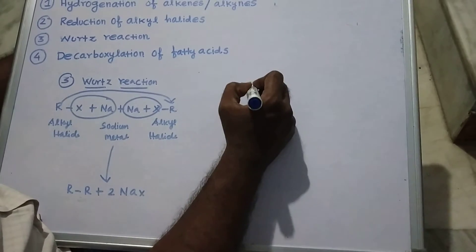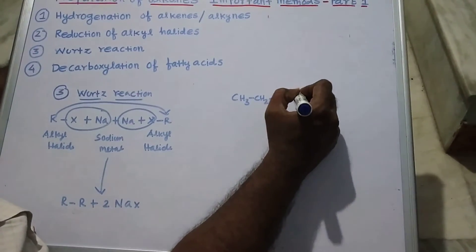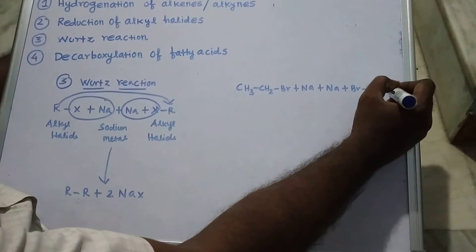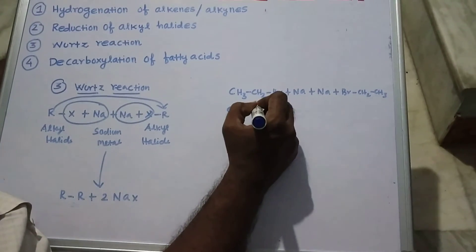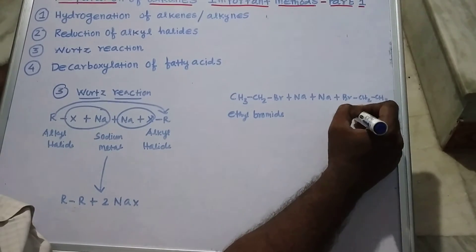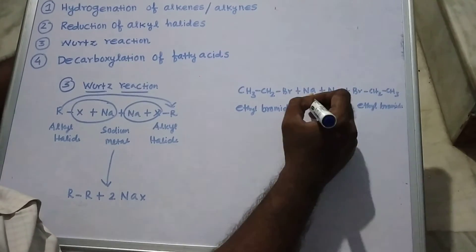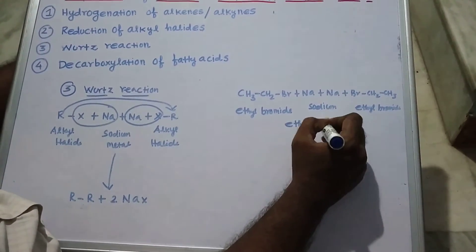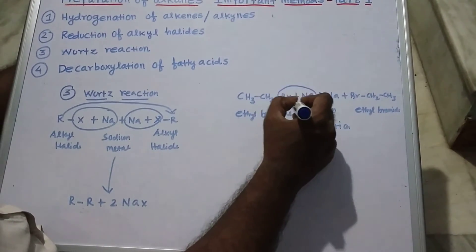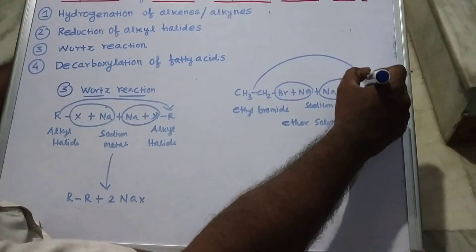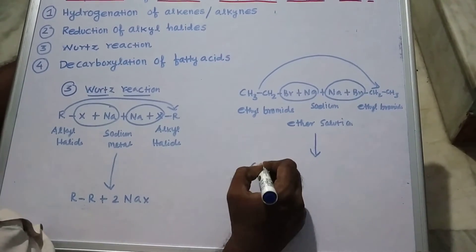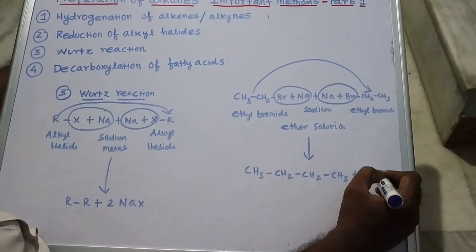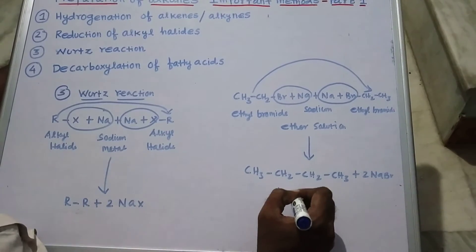For example, we take CH3-CH2-Br plus Na, plus Na and Br-CH2-CH3. This is ethyl bromide reacting with another ethyl bromide in the presence of sodium metal in ether solution. There is elimination of NaBr and NaBr. The two ethyl groups combine, and as a result we get CH3-CH2-CH2-CH3 plus two molecules of NaBr. We obtain butane.